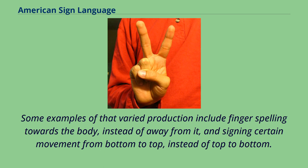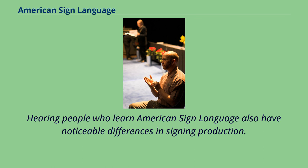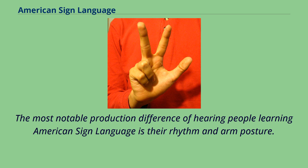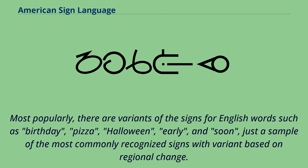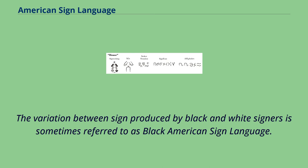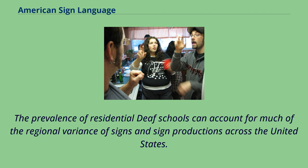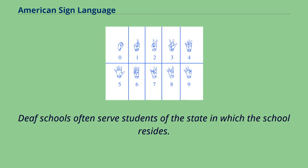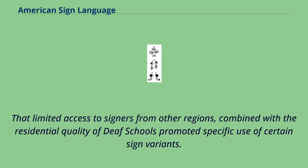Signers who learned American Sign Language as a second language vary in production. For deaf signers who learned a different sign language before learning ASL, qualities of their native language may show in their ASL production. Some examples include fingerspelling towards the body instead of away from it, and signing certain movements from bottom to top instead of top to bottom. Hearing people who learn ASL also have noticeable differences, most notably in their rhythm and arm posture. Most popularly, there are variants of signs for English words such as birthday, pizza, Halloween, early, and soon, among the most commonly recognized signs with regional variants.